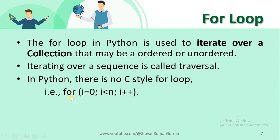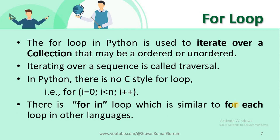In other languages, the for loop syntax involves initialization, condition, and increment or decrement. But in Python we have a different syntax. The for loop in Python is also called a for-in loop because we use two keywords: 'for' and 'in'. This for-in loop is similar to the for-each loop in other languages like Java, where the intention is also to iterate over a collection.